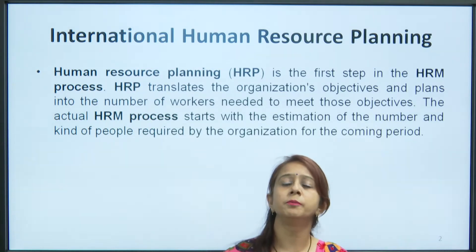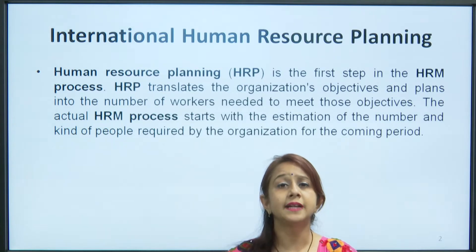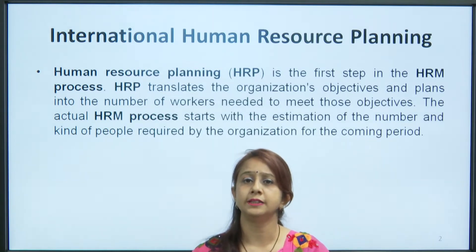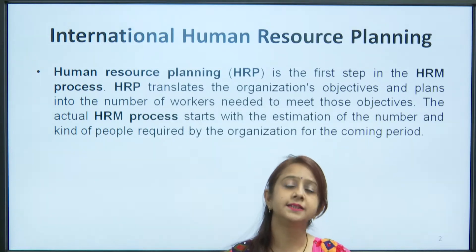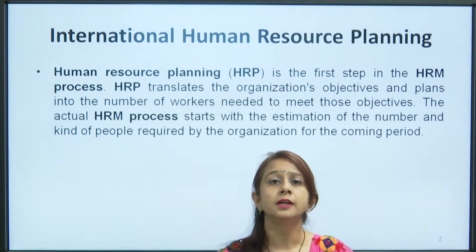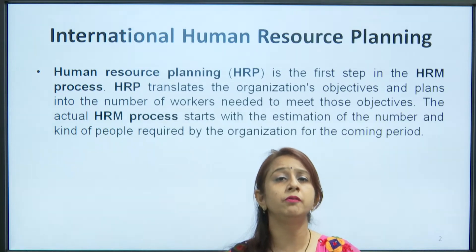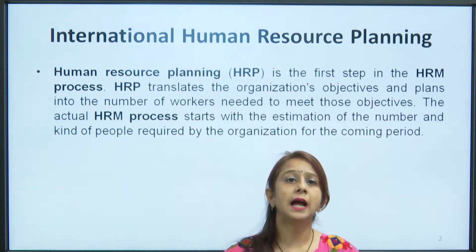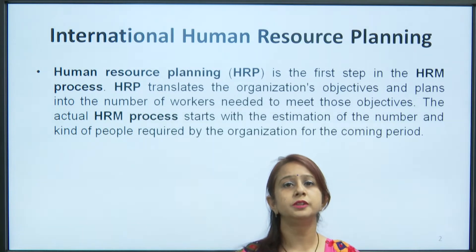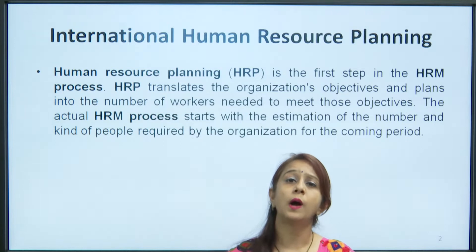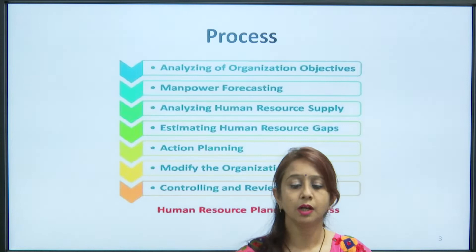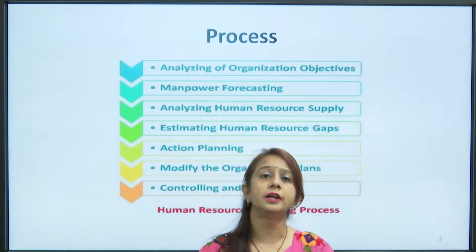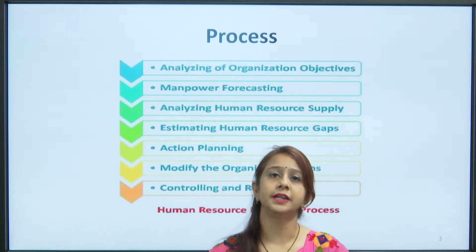The basic objective of human resource planning is to decide on the objectives of the organization and then plan how many people will be required to meet those objectives. The actual HRM process starts with the estimation of the number and kind of people required by the organization to fit into that organization structure. We need to understand the human resource planning process in detail.